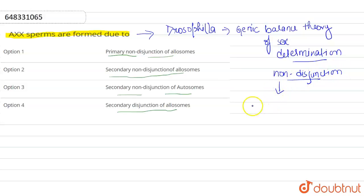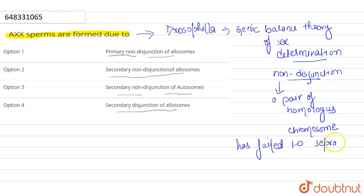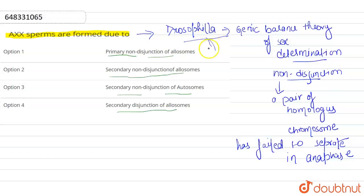First, let's see what is non-disjunction. Non-disjunction is when a pair of homologous chromosomes has failed to separate in anaphase.